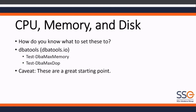This is not a set and forget with any of these — it's a set and monitor, then tweak based on your workload. For cost threshold of parallelism, there's a lot of documentation out there. At SSG, we like to set cost threshold of parallelism to 75. Some like to set it at 50, but we like to start at 75 and monitor, because this is 100% set and monitor.